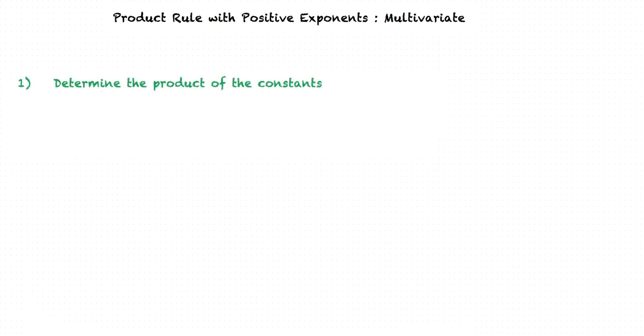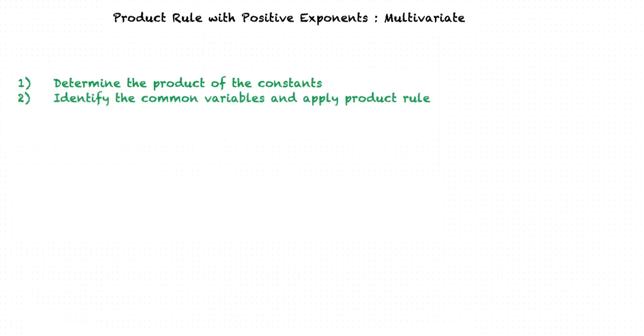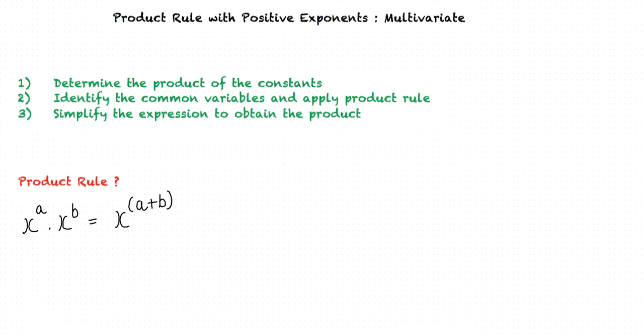We first determine the product of the constants. Next, we identify the common variables and apply the product rule. When multiplying common variables with positive exponents — that is, if we have a product of the form x to the power a times x to the power b, where a and b are positive — this can be written as x to the power a plus b. In other words, when we have the product of the same variables with positive exponents, we keep the common base and add the exponents. We finally simplify the expression to obtain the product.